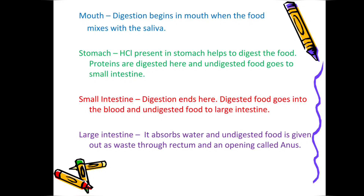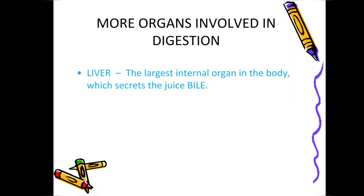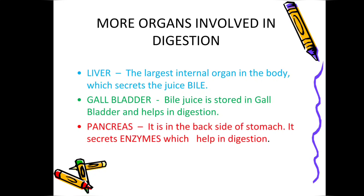There are a few more organs involved in digestion. The liver is the largest internal organ in the body and it secretes a juice called bile. Bile juice is stored in the gallbladder and helps in digestion. The pancreas is at the back side of the stomach and it secretes enzymes which help in digestion.